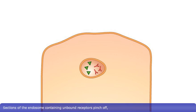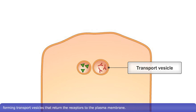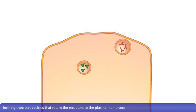Sections of the endosome containing unbound receptors pinch off, forming transport vesicles that return the receptors to the plasma membrane.